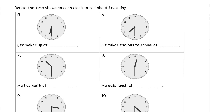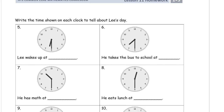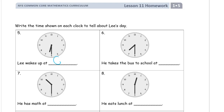Now I'll write the time shown on each clock to tell about Lee's day. Lee wakes up — this looks like half past six. If we're going to write the time digitally, it'll be 6:30. Then next, he takes the bus to school, about an hour later. The hour hand is in between the seven and the eight, so that's half past seven. The minute hand is down at the six, so that's going to be 7:30.